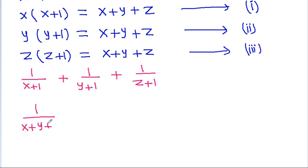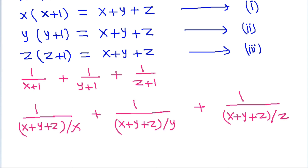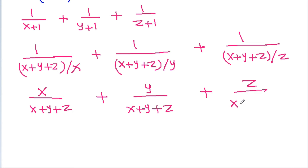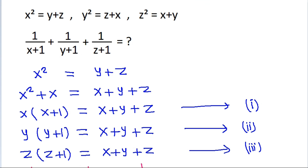From equation 2, y plus 1 is equal to x plus y plus z divided by y. From equation 3, z plus 1 is equal to x plus y plus z divided by z. So the expression becomes x divided by (x plus y plus z), plus y divided by (x plus y plus z), plus z divided by (x plus y plus z), which equals x plus y plus z divided by x plus y plus z, and that is equal to 1.